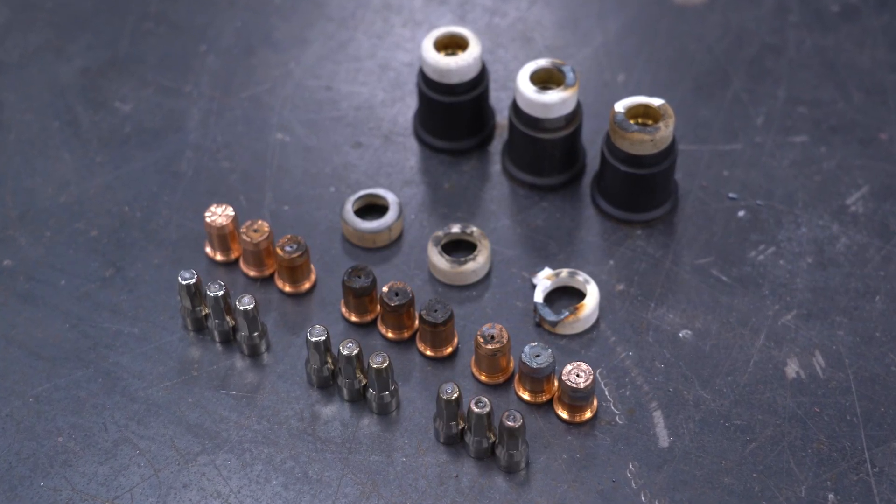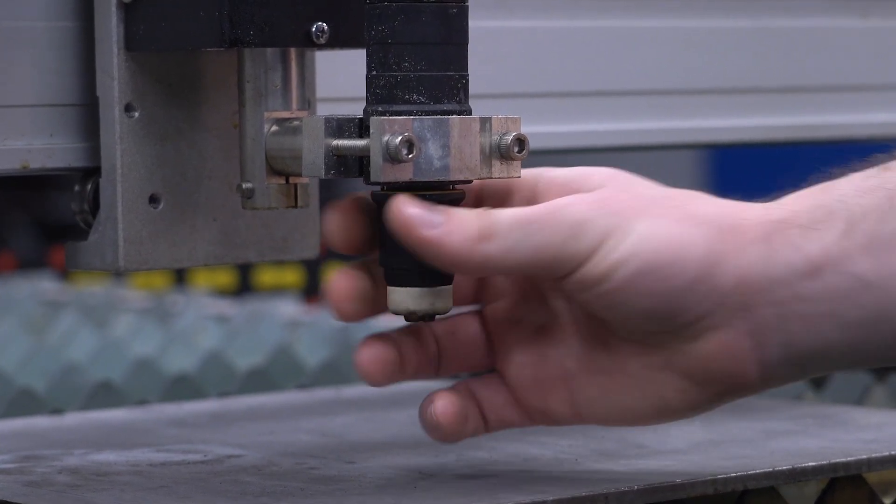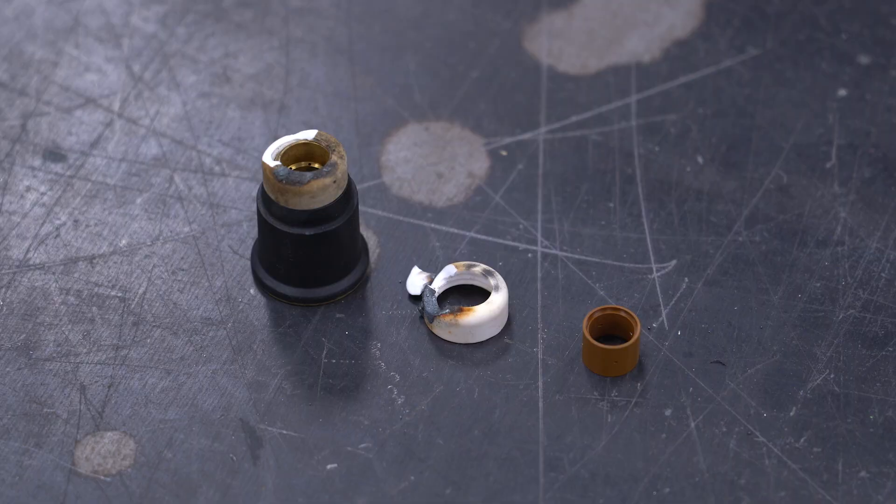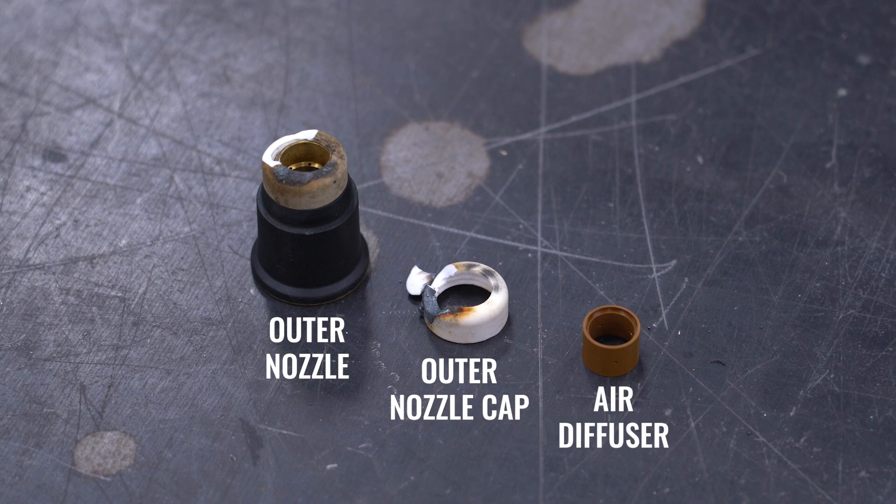How to check the consumables? Unthread the outer nozzle from the torch and the nozzle is right in here with the air diffuser. The cap, the outer nozzle, and the air diffuser don't need to be replaced unless damage is visible.